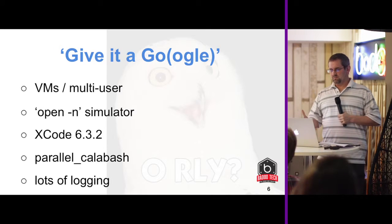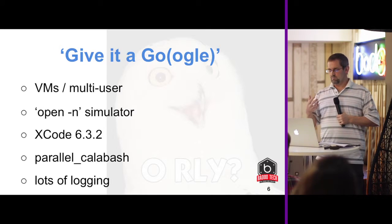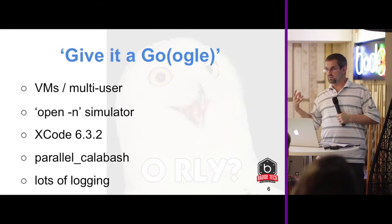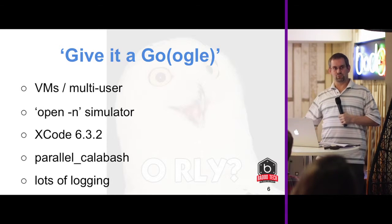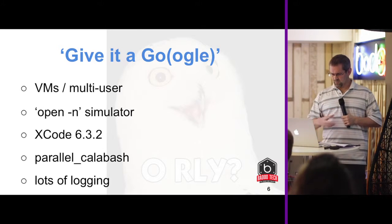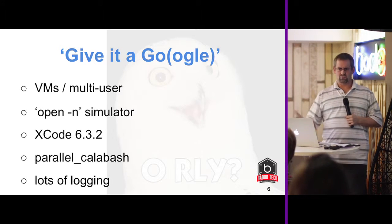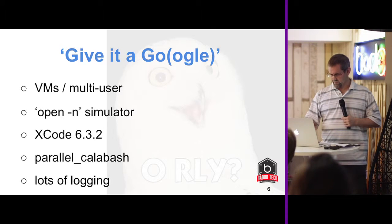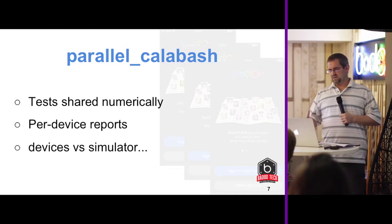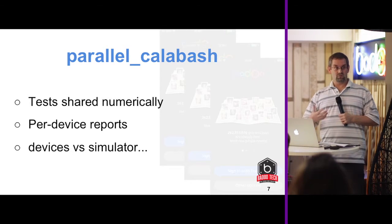With all that in mind, I basically took the utility that we use for multiple Cucumber testing on Android and adapted it to work with iOS. Lots of logging, lots of messing around and jiggery-pokery to try and get things going. Parallel Calabash is a bit of a bodge — it works, it's useful, but unfortunately there are some shortcomings.